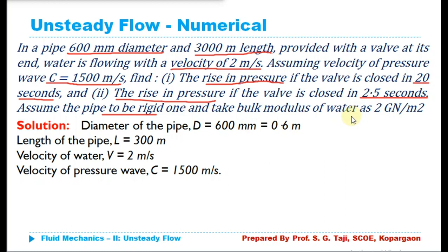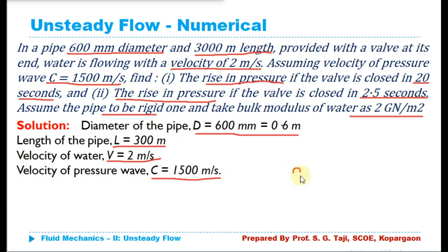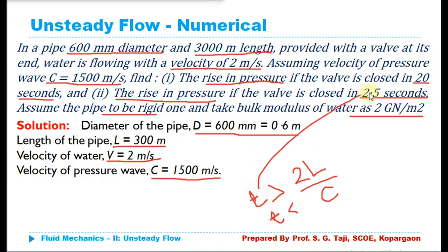Take bulk modulus of water as 2 giga newton per meter square. Write down all the given data and what we need to find — the pressure intensity or pressure rise due to valve closing. First, we need to determine whether the valve has been closed gradually or instantaneously, using the ratio 2L/C. If 2L/C is greater than T, it is gradual closure; if it is less than T, it is instantaneous closure, where T is the time taken to close the valve.